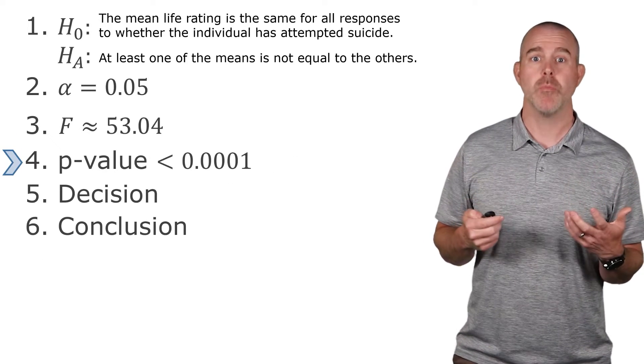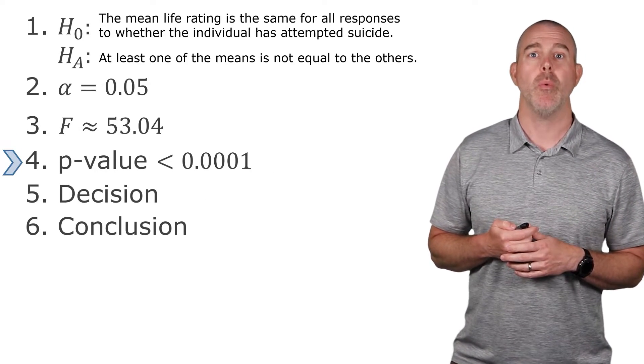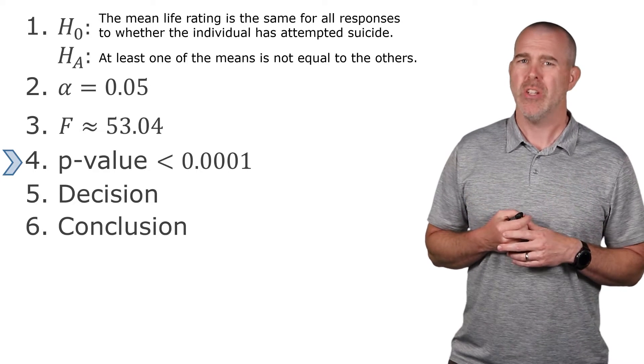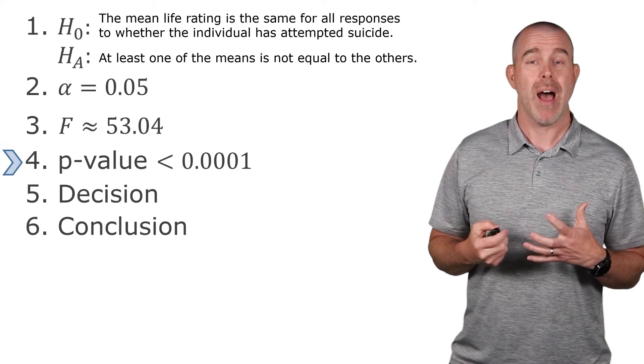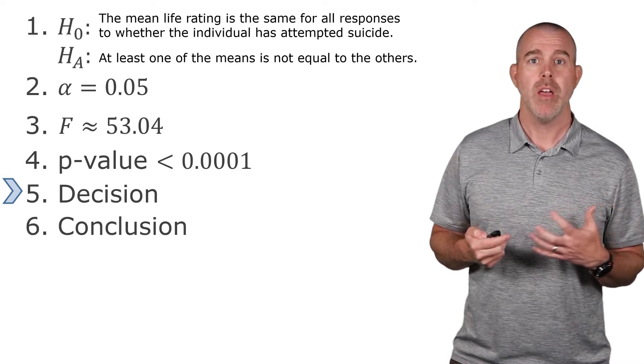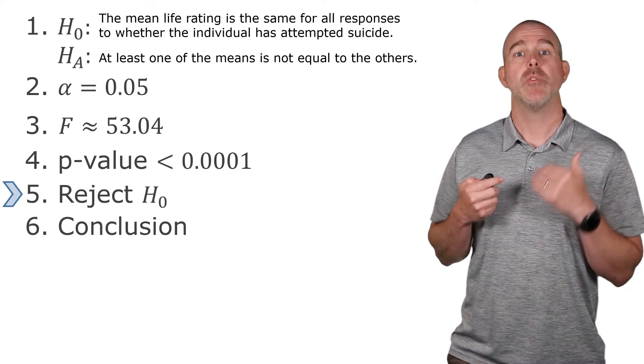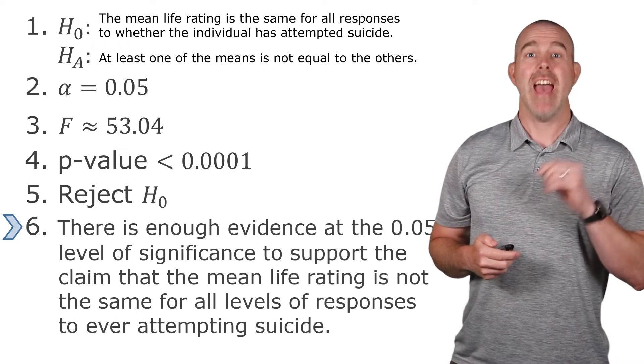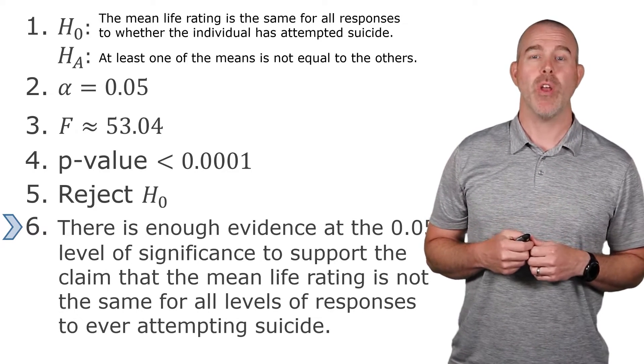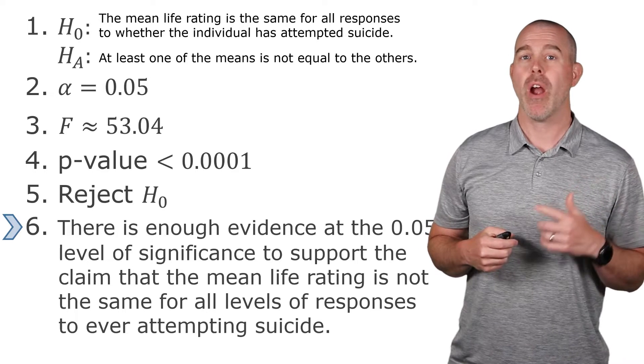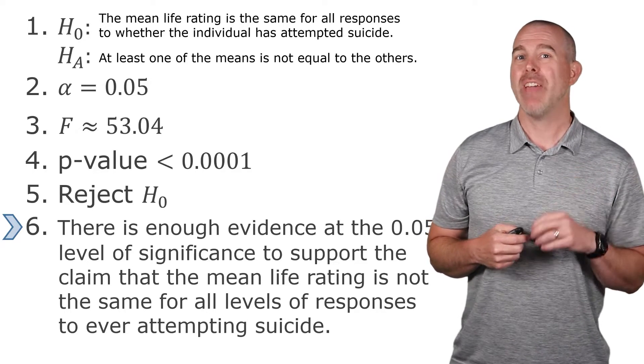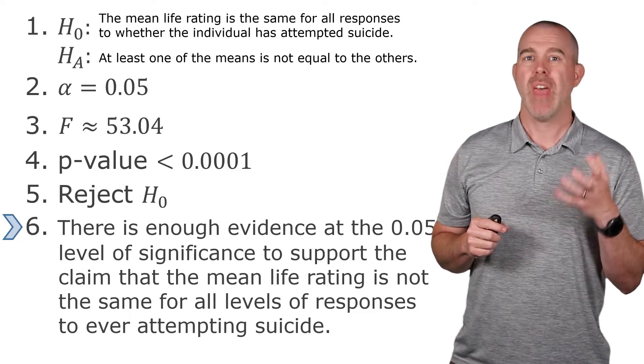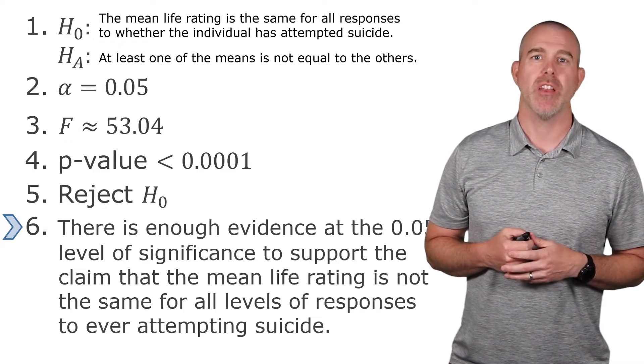The p-value here, very small, less than 0.0001. We could have kind of seen that on the box plots. They looked pretty different, so it's not a surprise that the p-value is very small. That tells us we should decide to reject the null hypothesis. And for our conclusion, we would say yes, there is enough evidence at the 0.05 level of significance to support our claim that the mean life rating is not the same for all levels of responses to that ever-attempting suicide question.